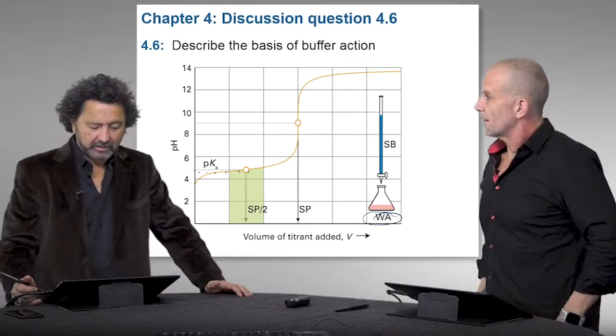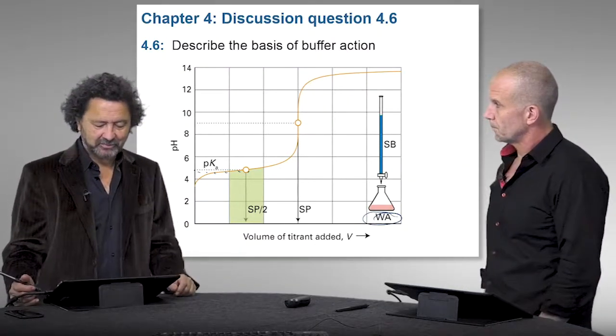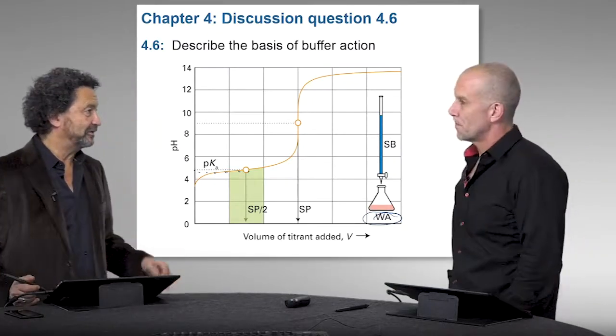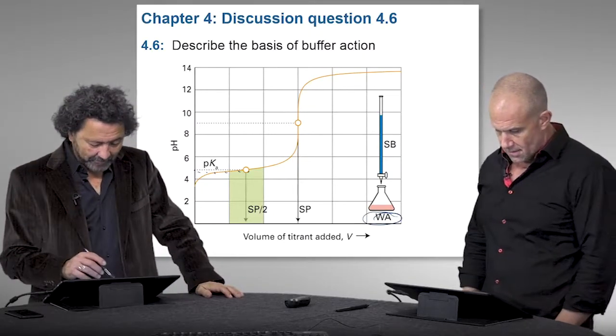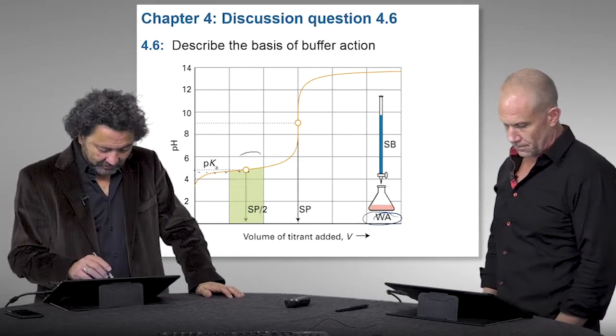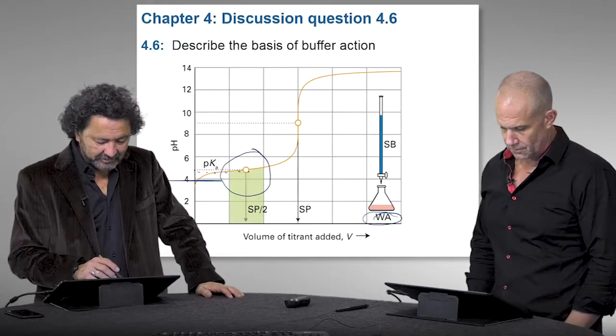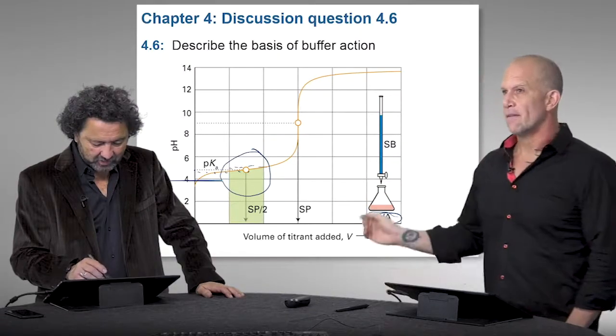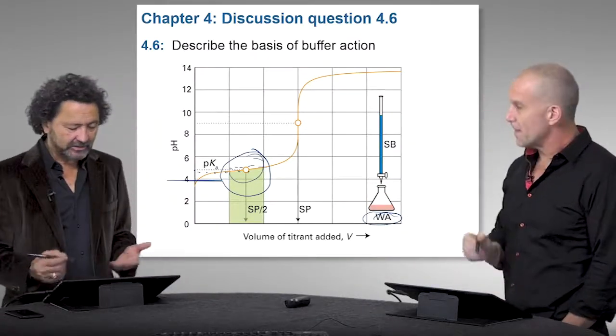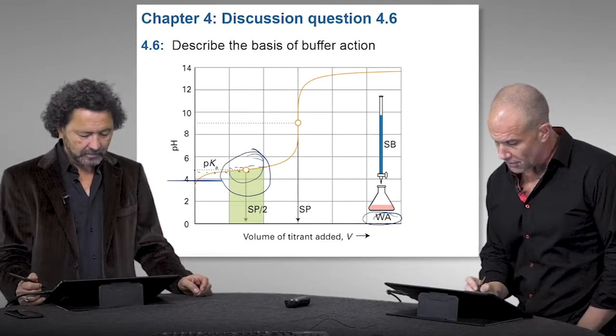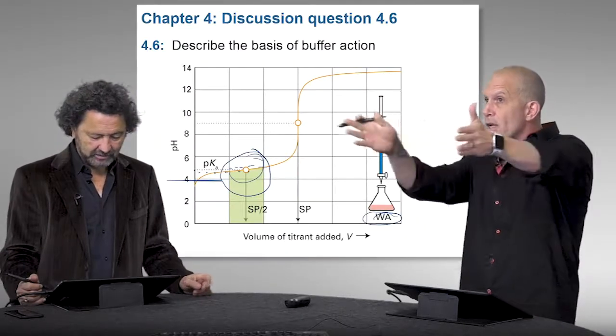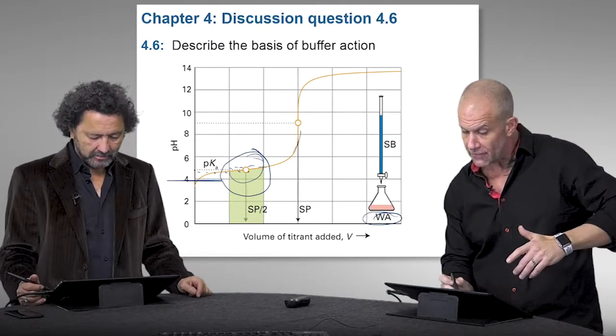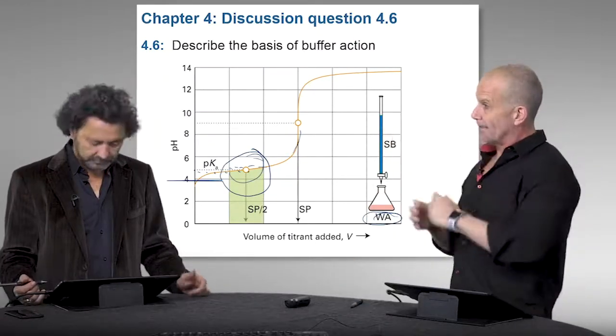So the basic rule is that you cannot have very effective buffers if you have a very strong acid or a very strong base. Precisely because this region here is precisely the region where the pKa and the pH stay the same, approximately constant. And the better it is, the more horizontal it is over this region and the more volume or concentration it can stay horizontal before you start getting these huge deviations.